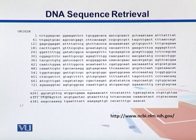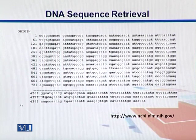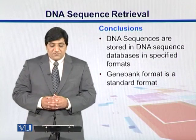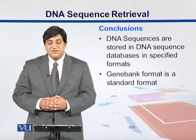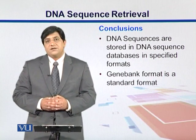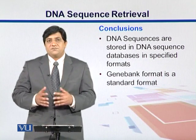Further down we reach the word 'origin', where we can see the actual nucleotide sequences, starting from position one up till the last nucleotide. The sequence ends with a double slash sign. DNA sequences are stored in DNA databases in specific formats, and GenBank is kind of a standard format.